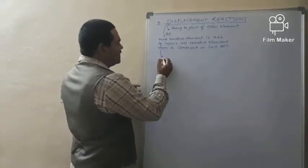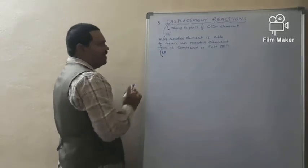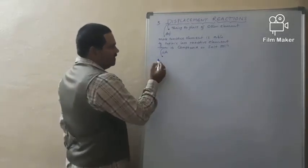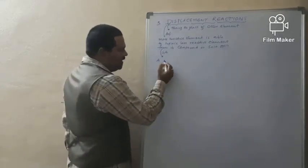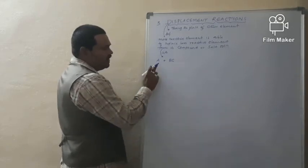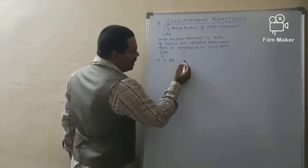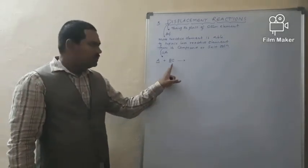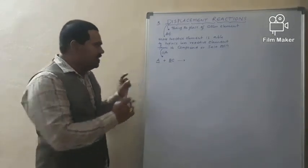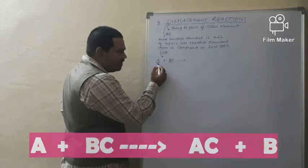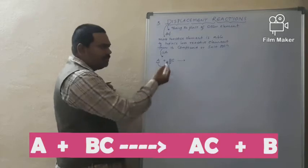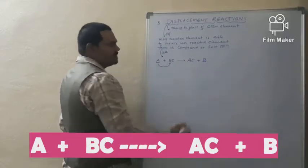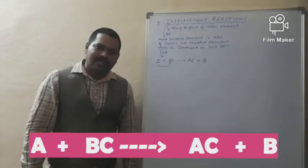What is the general representation of a displacement reaction? If we consider A as an element that reacts with compound BC, where B is a metal and A is also a metal, and A is more reactive than B, then A is able to replace the position of B. So AC compound is formed as the first product, along with element B becoming set free. This is the general representation: A + BC → AC + B.